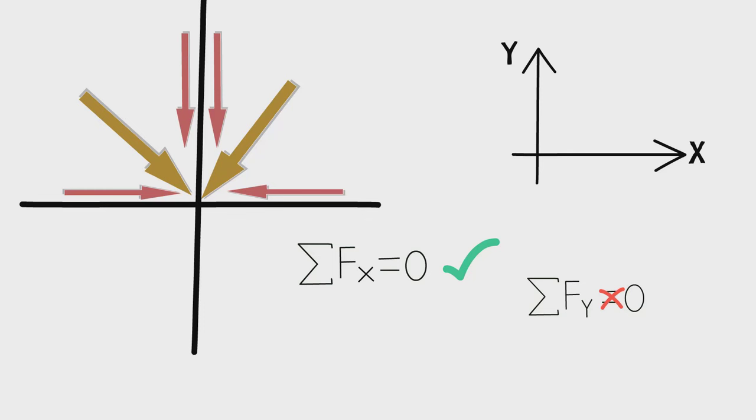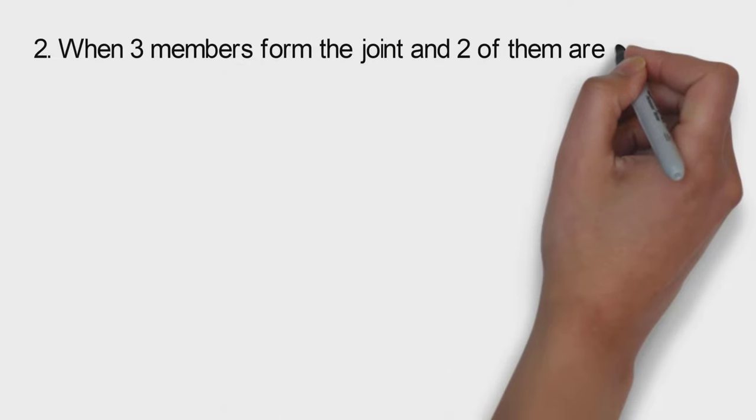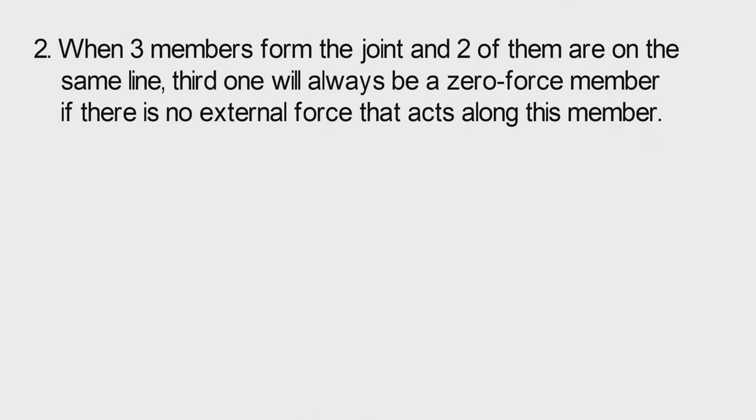Try putting forces in any different way and see if equilibrium is achievable or not. Second condition is when three members form the joint and two of them are on the same line, the third one will always be a zero force member if there is no external force that acts along this member.